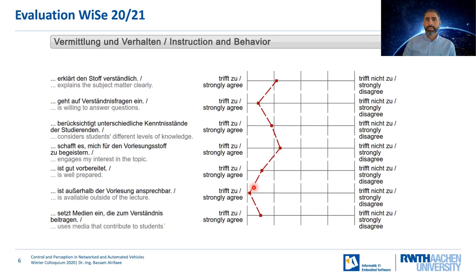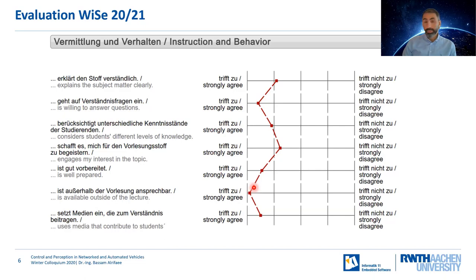Here we see the evaluation of instruction and behavior. It is obviously worse than the lecture concept, and also worse than last year. This could be related to digital lecturing due to the pandemic — I'm speaking to a screen, and you are looking at a screen. Maybe you see me, but very small. Maybe some of you are not happy with this, but this is what I could do this semester. I hope the next winter semester will be again in presence, and we will hopefully have good instruction and behavior again.